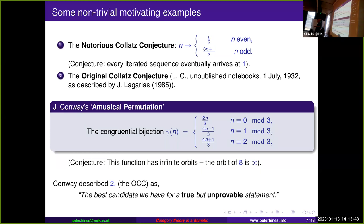Fortunately, Conway's motivation was another problem related to Collatz's, nowhere near as well known. It was written down on the first of July 1932 in Collatz's notebooks — unpublished and almost lost from that point onwards. It was popularized by Lagarias in 1985, and Conway picked it up and used it as motivation for his work on unpredictable iterations.